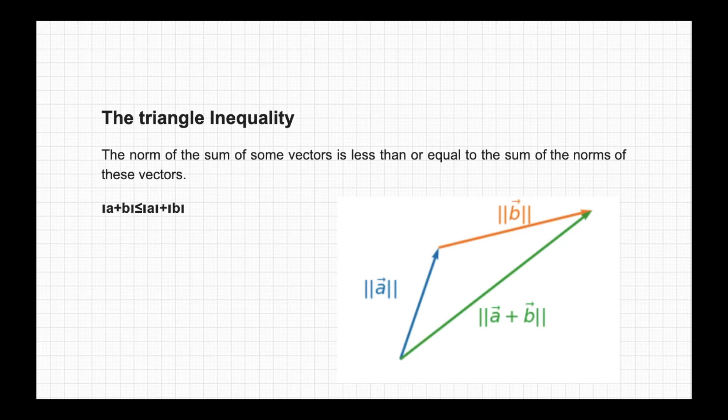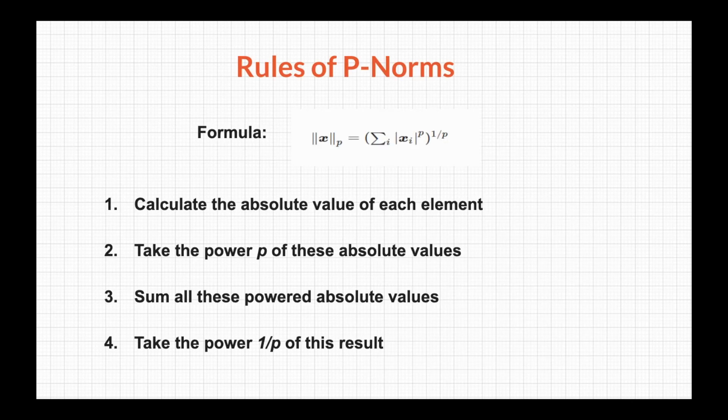Geometrically, this simply means that the shortest path between two points is a line. Now let's talk about the different ways to calculate these norms. There are different rules for calculating the p-norms. We call them p-norms because the step-by-step process to calculate the norms depends on the value of p.